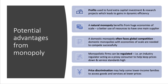Monopolistic firms can and are regulated. The industry regulator can act as a proxy consumer to help keep prices down and service standards high. Price discrimination, which you will have covered in revision, can in theory help some lower-income families on a limited budget to access important goods and services at lower prices.